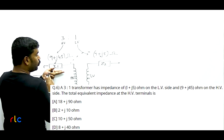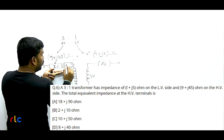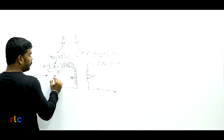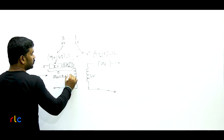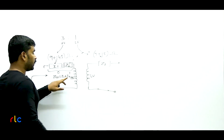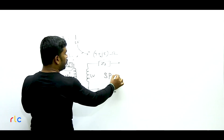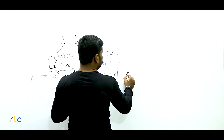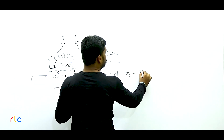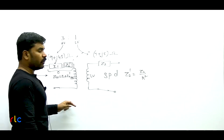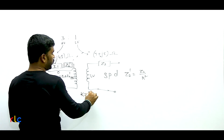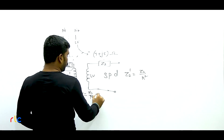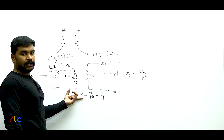Regarding the ratio of I²R loss to core loss: as we established earlier, distribution transformers are designed to have core losses less than full-load ohmic losses (PC < POH). This means I²R losses are relatively higher compared to core losses — a high I²R to core loss ratio. So Option A — low percentage impedance and high I²R to core loss ratio — is the right answer.